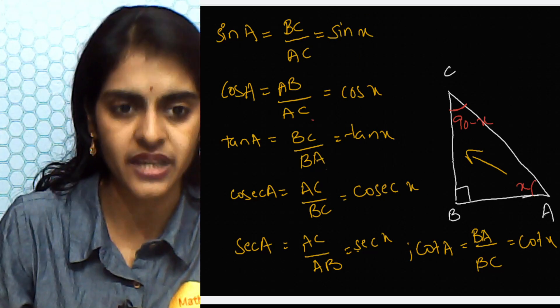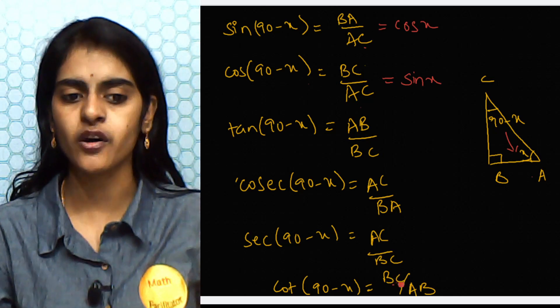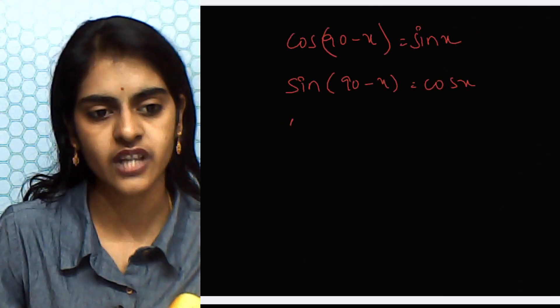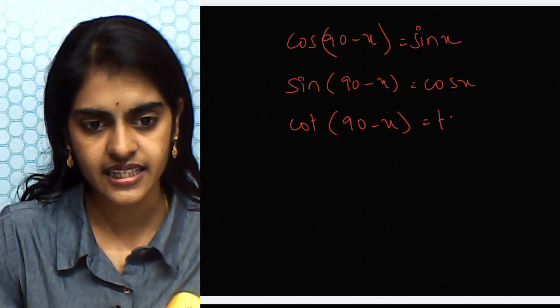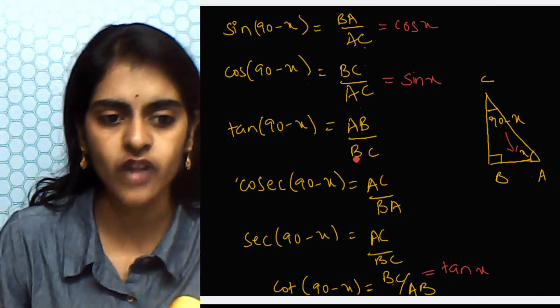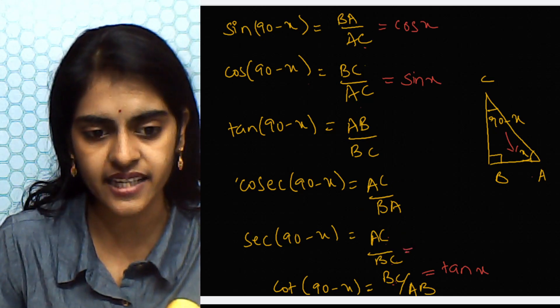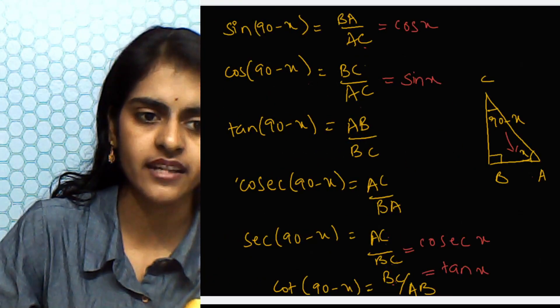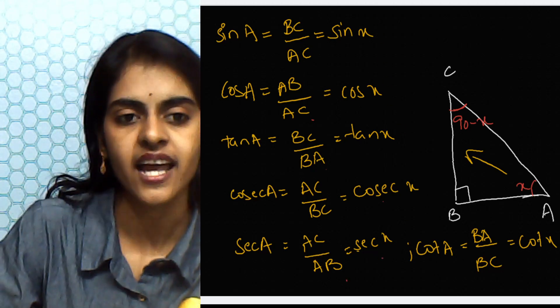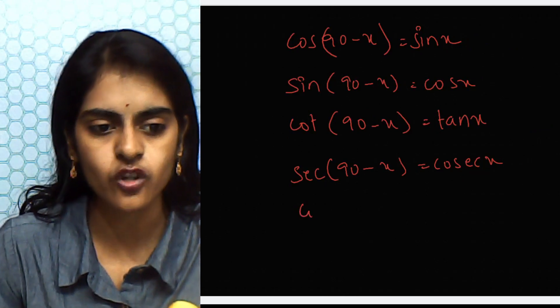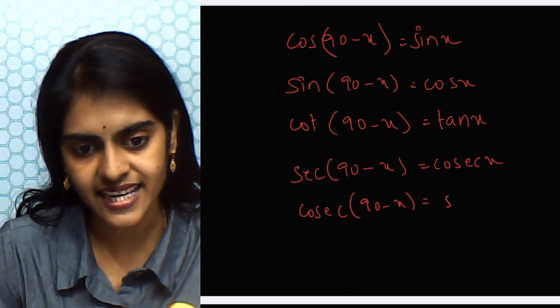Tan x = BC/AB. In the (90° − x) column, cot(90° − x) = BC/AB — the same value. So cot(90° − x) = tan x. Next, cosecant x = AC/BC. In the (90° − x) column, secant(90° − x) = AC/BC. So secant(90° − x) = cosecant x.